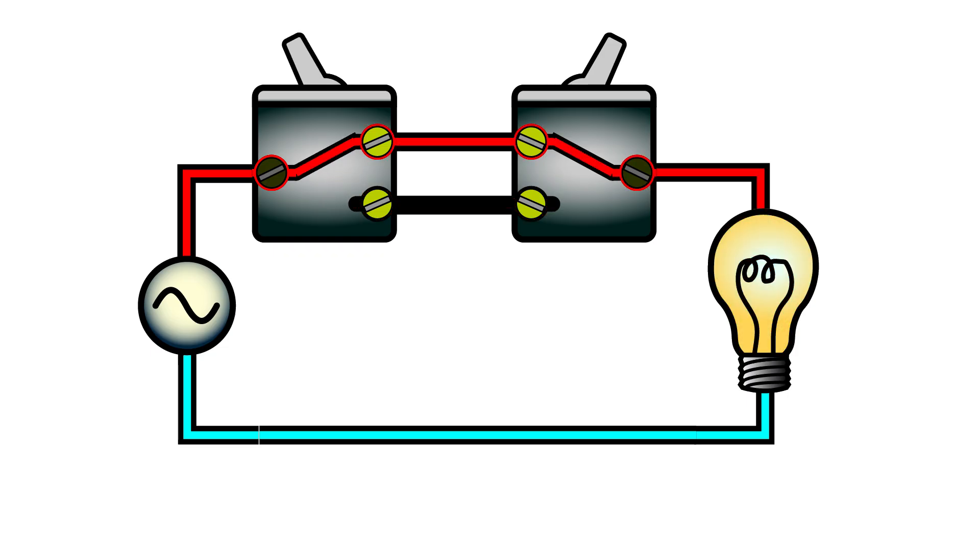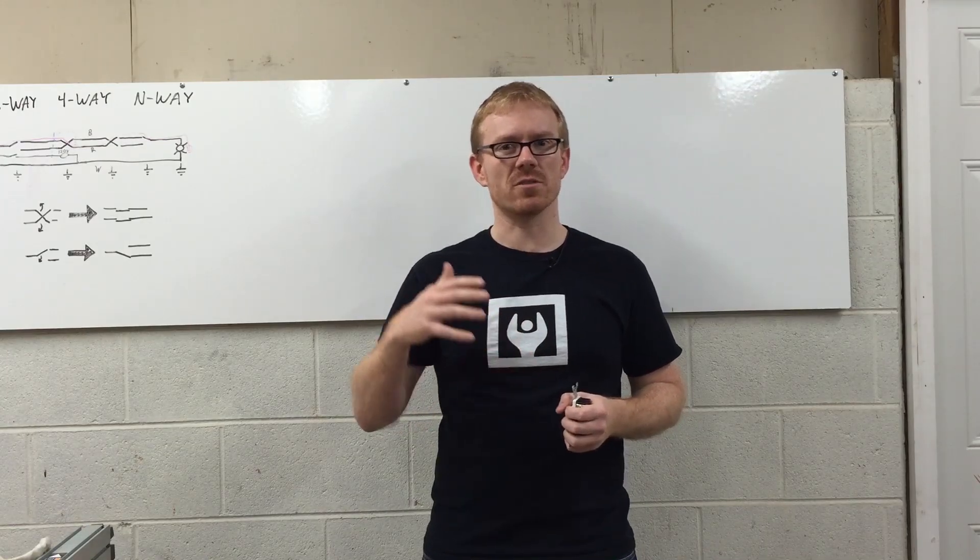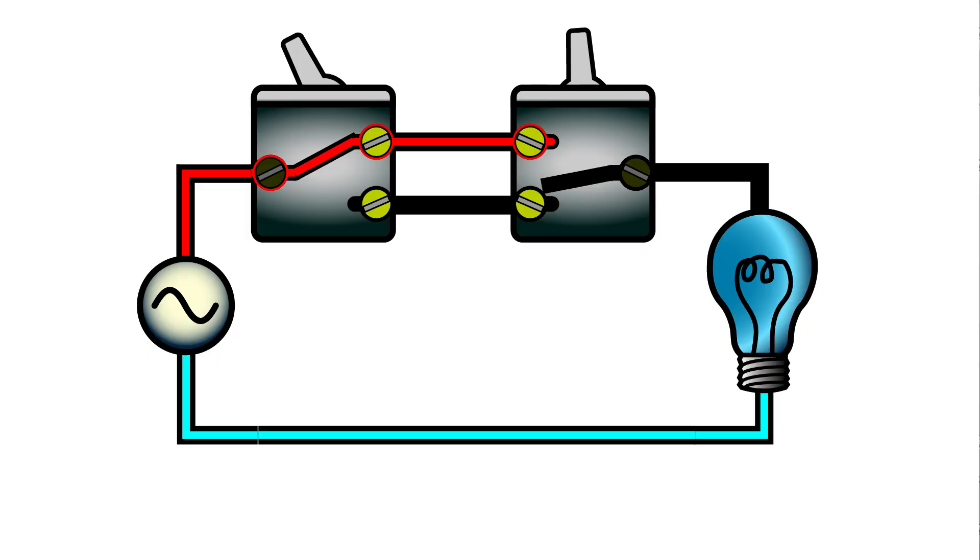When the first switch is toggled, the top traveler is energized. When the second switch is toggled, the energized traveler, or the unenergized traveler, is switched on to the source side of the load. Depending on which traveler is connected to the load, it'll either be turned on or off. Either switch can be used to control the load.